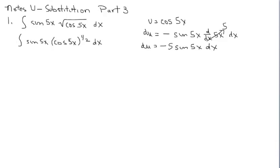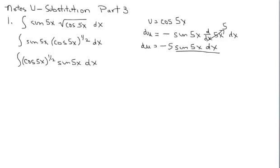Looking back, I have u to the 1/2, and this differential is sine(5x) dx. I've got the sine(5x) with the dx — I just need to bring in a negative 5. Rearranging: cosine(5x) to the 1/2 in front, and sine(5x) dx behind. Since I've got sine(5x) dx, I bring in a constant multiplier. If I bring in negative 5, I pull out a negative 1/5. I'm ready to convert to a u-integral: negative 1/5 times the integral of u to the 1/2, and all of this is du.